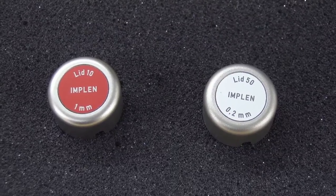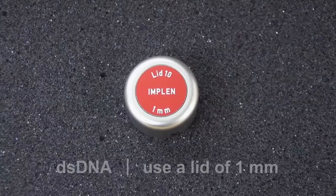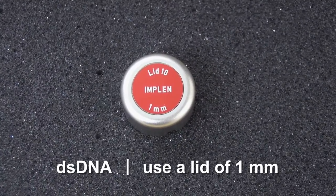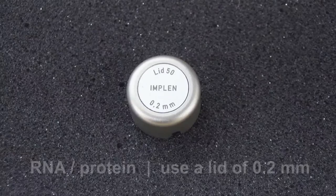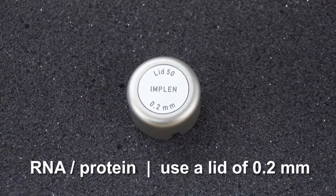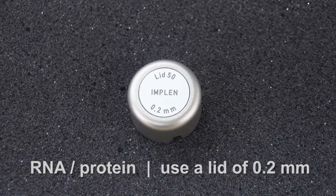4. Choose a proper lid based on the kind of sample. Use a lid of 1 millimeter path length for double-stranded DNA and use a lid of 0.2 millimeter path length for RNA or protein.